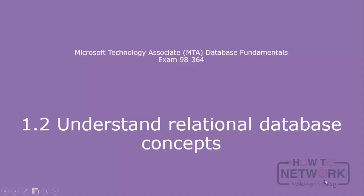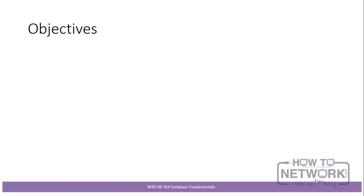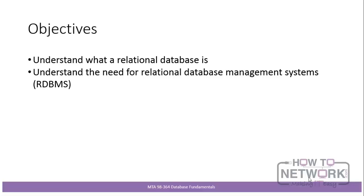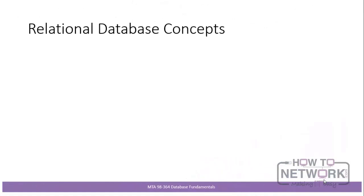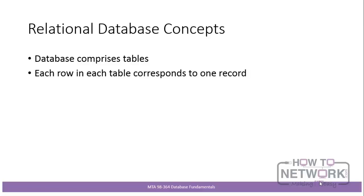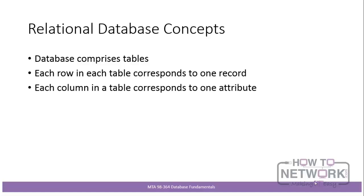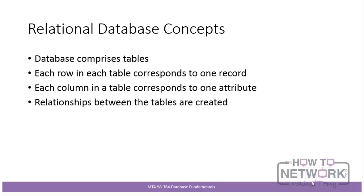Hello and welcome to Section 1.2: Understand Relational Database Concepts. The objectives are: understand what a relational database is, understand the need for relational database management systems, and understand how relations are established. A relational database comprises tables. Each row in each table corresponds to one record. Each column corresponds to one attribute of a record. We establish relationships between tables as the skeleton of our relational database.